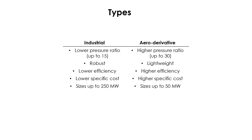This table compares the two types. Industrial turbines normally have a lower pressure ratio of up to 15. They are more robust, lower in efficiency, lower in specific cost, and the size is typically up to 250 MW.